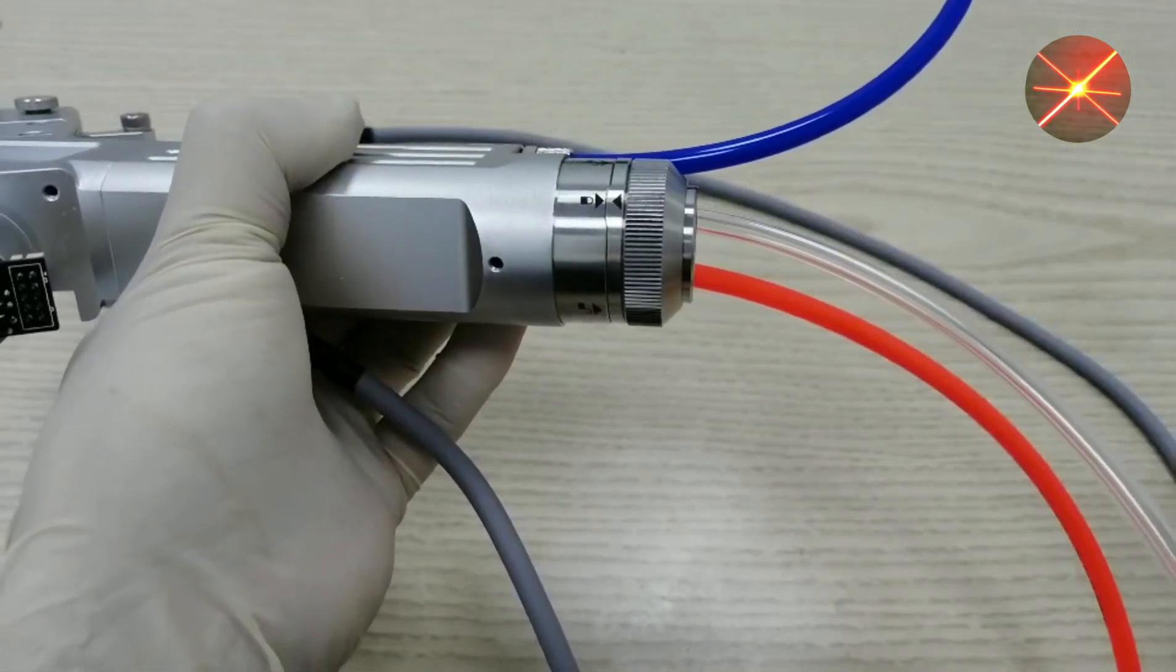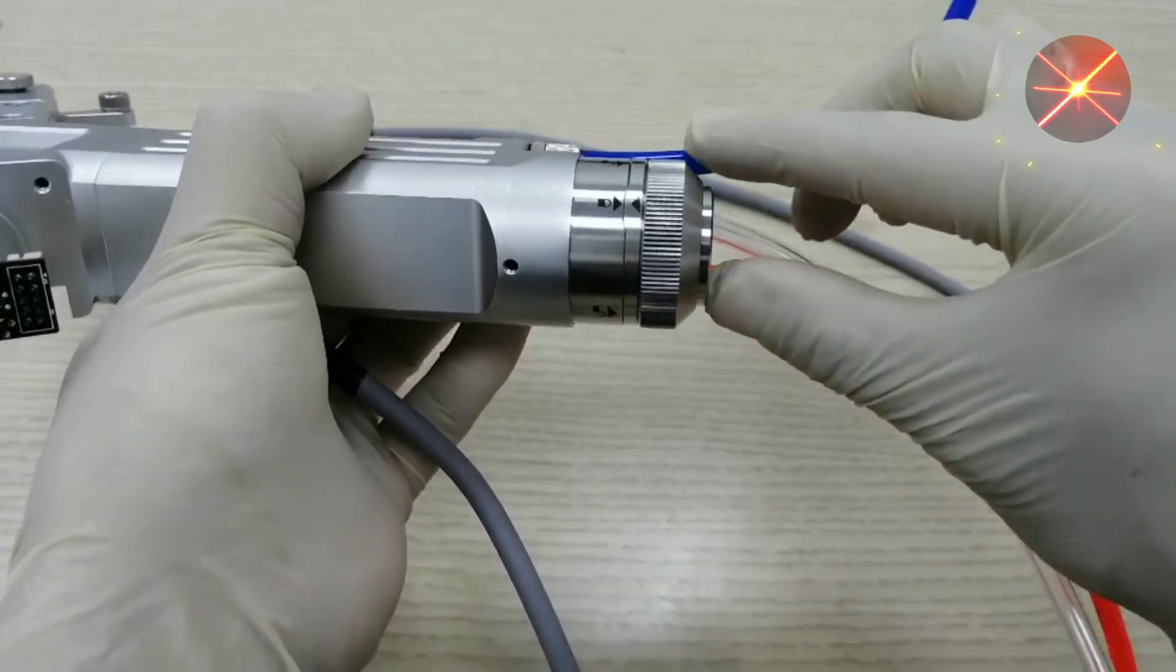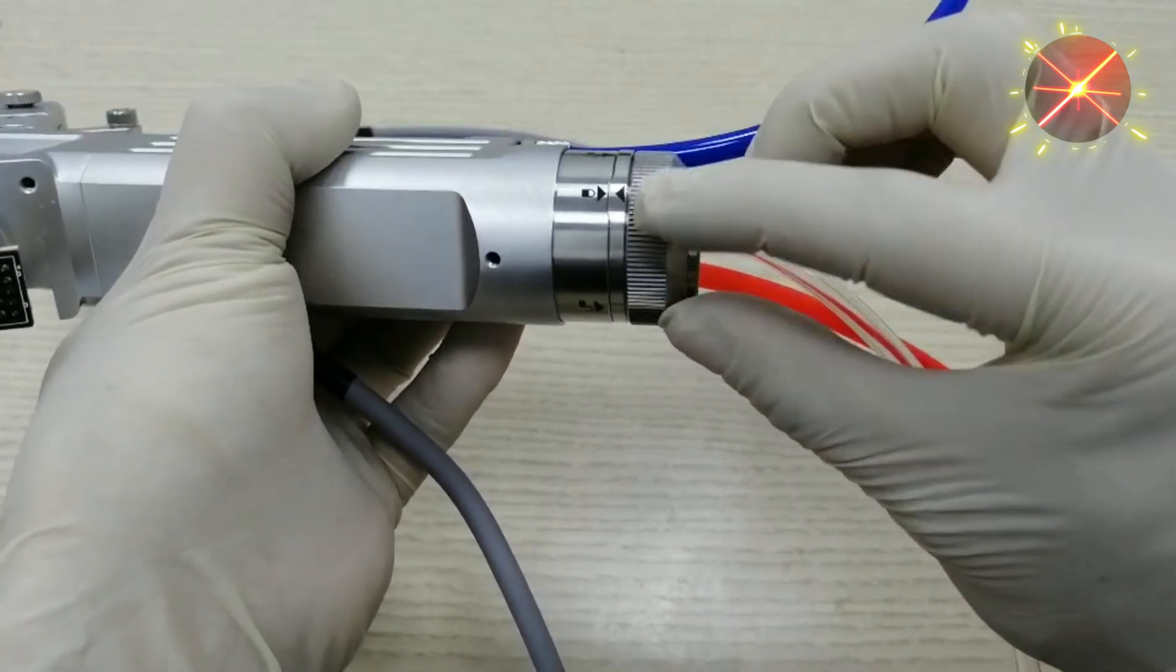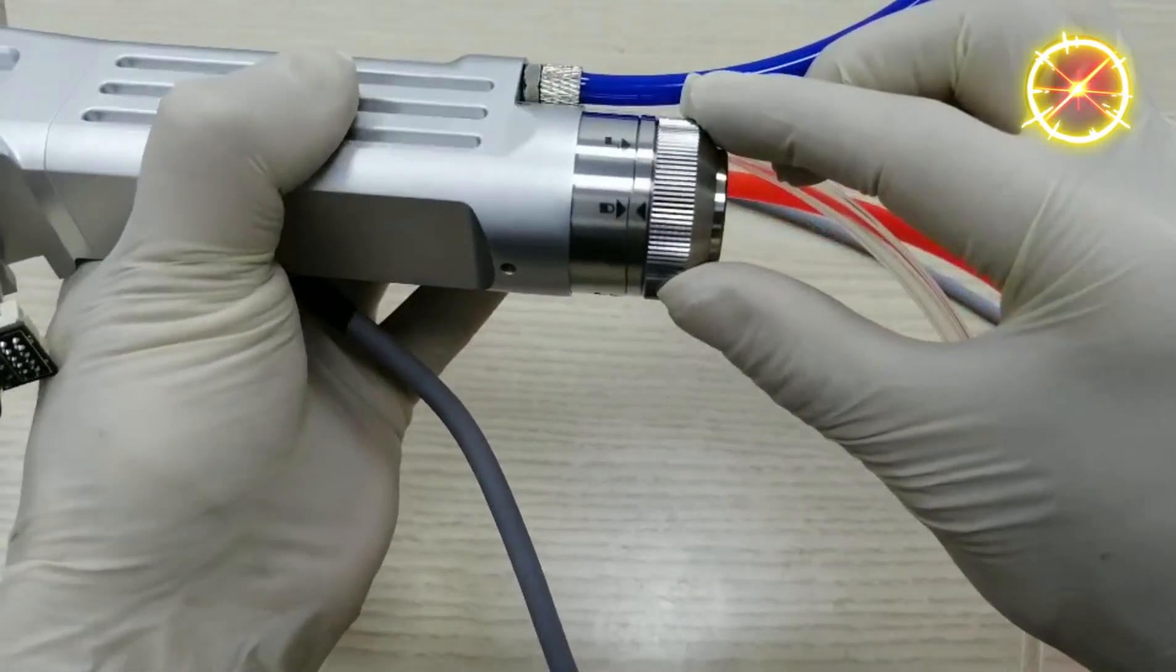How to connect the new version of the Fibre QBH interface. First, this is a QBH that has been locked - it is now in a locked state. Then here is an unlocked state.